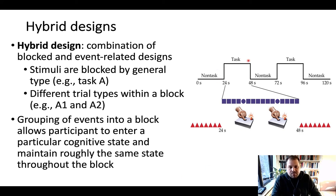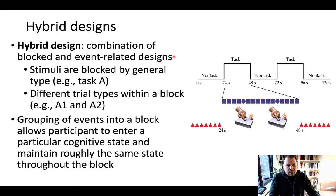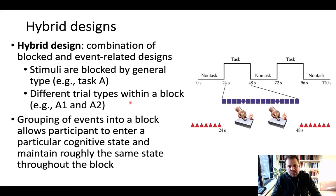You can see here that there's a task block within which participants are performing some kind of task, such as detecting infrequent stimuli and pressing a button to those. That's followed by non-task blocks and a different task. This allows you to have different types of stimuli blocked based on a general type, so task A, and within a different block you can have different types of groups, so A1, A2 in one block and B1 and B2 in another block.